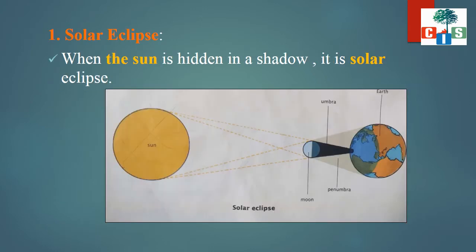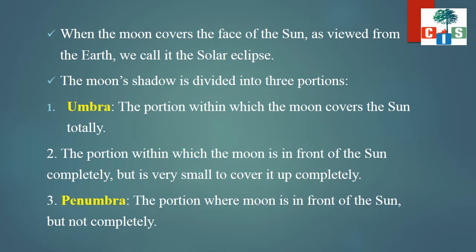The first one is the solar eclipse. You can see in the diagram — Sun, Moon and Earth are in a line. When the Sun is hidden in shadow, it is the solar eclipse. The Sun gets hidden due to the shadow of the Moon, and that is called the solar eclipse. When the Moon covers the face of the Sun as viewed from the Earth, we call it the solar eclipse.